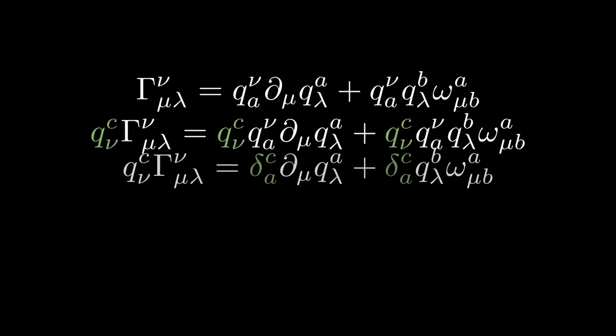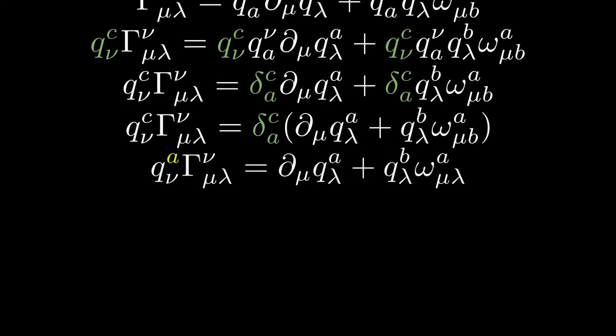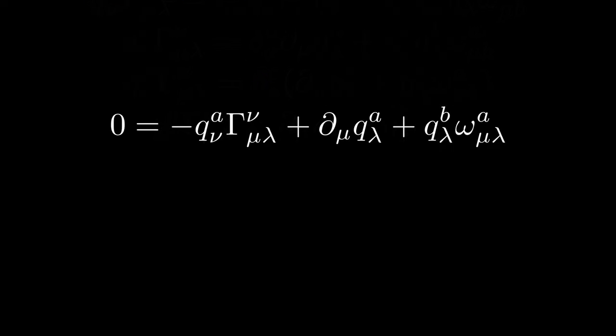Nice, but do you want to see something cool? Let's go back to the Christoffel symbols formula. Multiply by q c nu, get the Kronecker deltas here and here, pull them out, and then it will eat the c index, giving us this. And now the ultimate flashback. Take a look at the covariant derivative of a mixed 1 1 tensor.